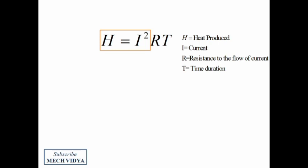If we see this relation closely, we can see that the heat produced is directly proportional to the square of the current. That means current is a very dominant factor here, so usually the current value is very high.